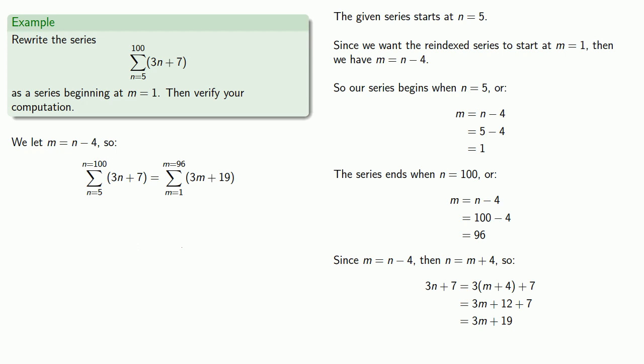Now having gone through all of this work, let's make sure that our two series are the same thing. They should have the same terms in the same order. So our series begins with n equals 5, so the first term of the series will be 3n plus 7 when n is equal to 5. Our next term will be 3n plus 7 when n is equal to 6. Our next term will be 3n plus 7 when n is equal to 7. And let's skip to the last term. When n equals 100, that last term will be 307.